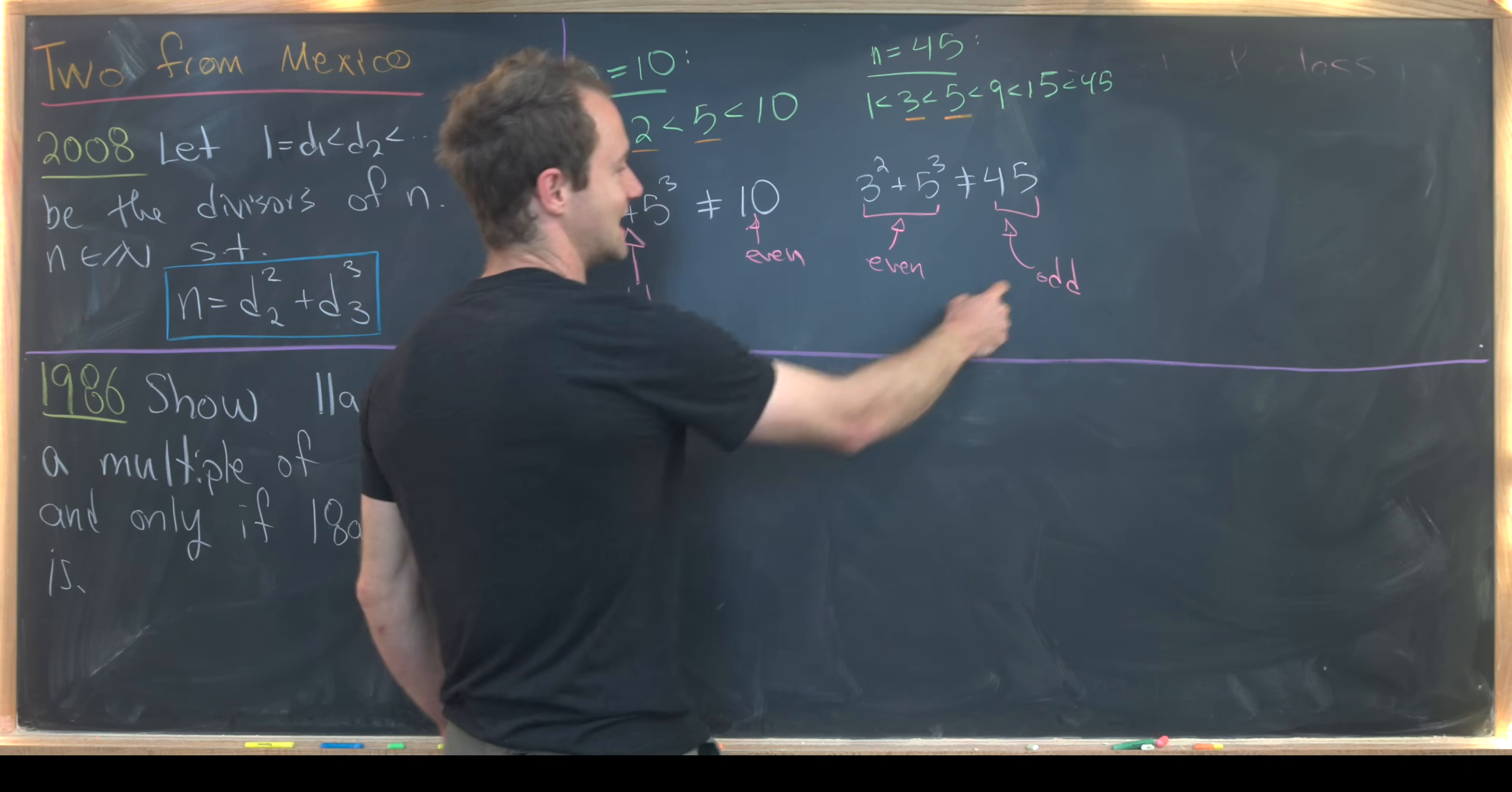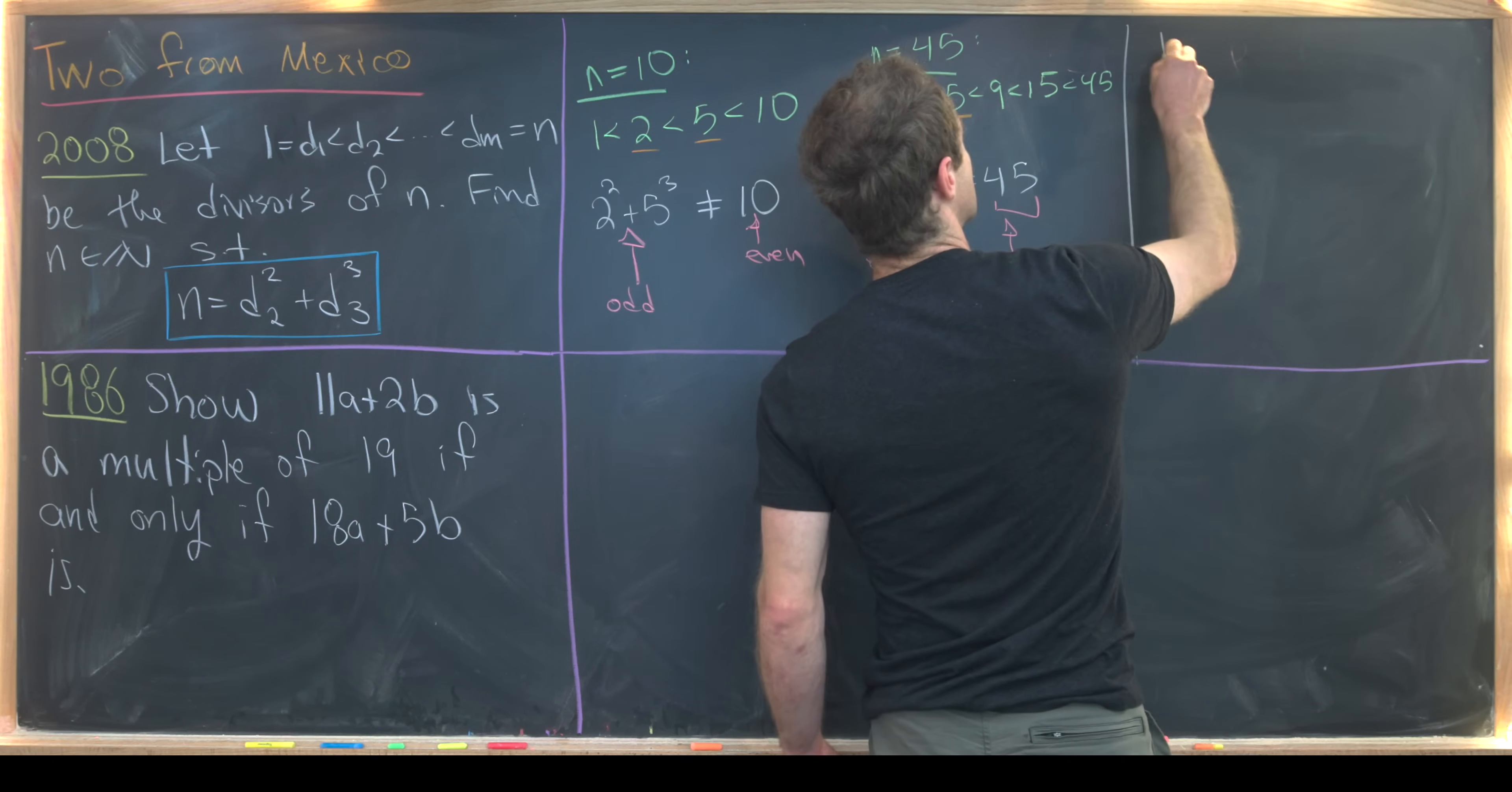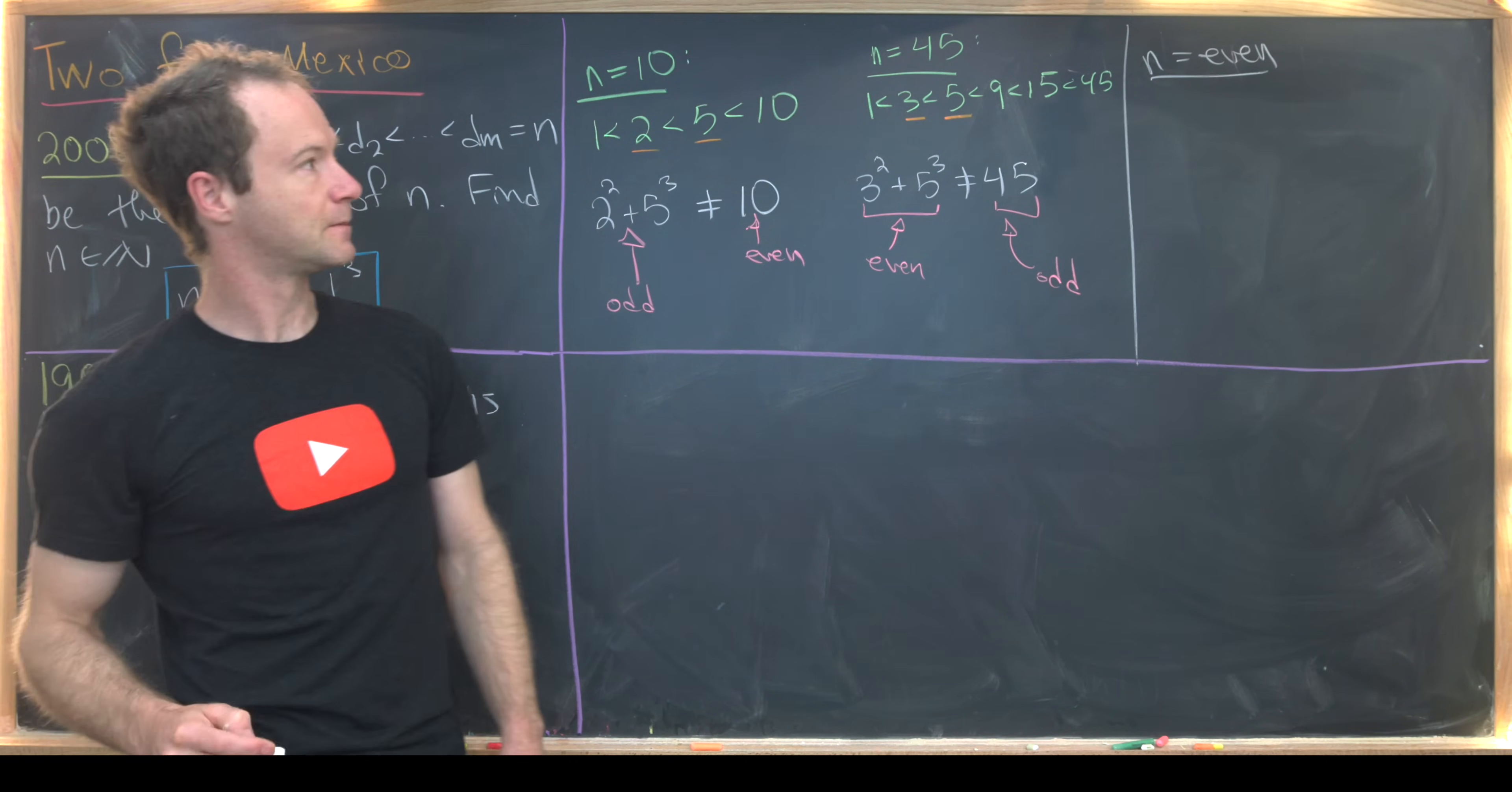So what does that tell me? Well, that first tells me that N cannot be odd. And why can N not be odd? Because then D2 and D3 would be odd, and so they sum to an even number. So in other words, we immediately know that N must be an even number because of that verbal discussion that we just had. If it was odd, all of its divisors would be odd. But if all of its divisors were odd, then this kind of combination would be even.